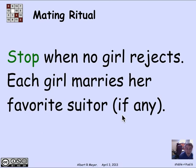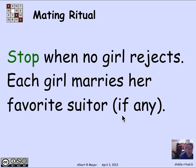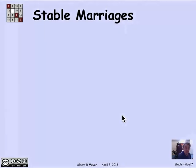This mating ritual continues until nothing changes. And that's going to happen exactly when each girl has at most one suitor. Because if she has more than one suitor, she's going to reject the less favorite ones — that is the definition of the stopping condition. On that day, by definition, no girl can have more than one suitor, so she will marry the one suitor she has. And we claim that they are going to be stable marriages.